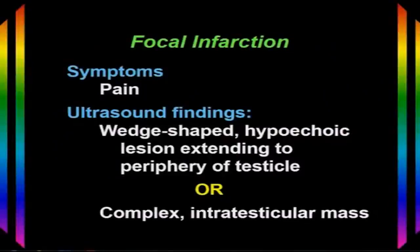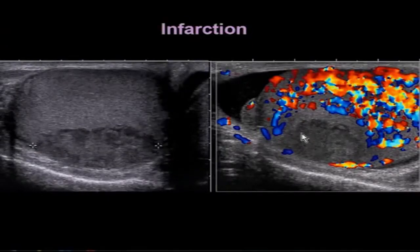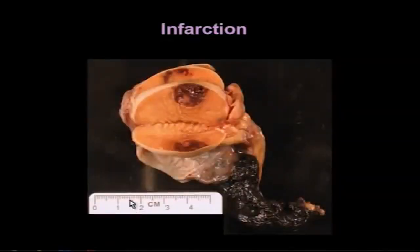Occasionally patients suffer a focal infarction, which tends to occur in older patients who present with acute pain. What we'll see is either a wedge-shaped hypoechoic area at the periphery of the testicle or a complex intratesticular mass — these are indistinguishable from tumors. Here's a patient who has an infarction: a focal well-defined lesion at the periphery of the testicle without blood flow, whereas the testicular parenchyma does have flow. This was still concerning for malignancy, so it was removed, and pathology showed focal infarction.